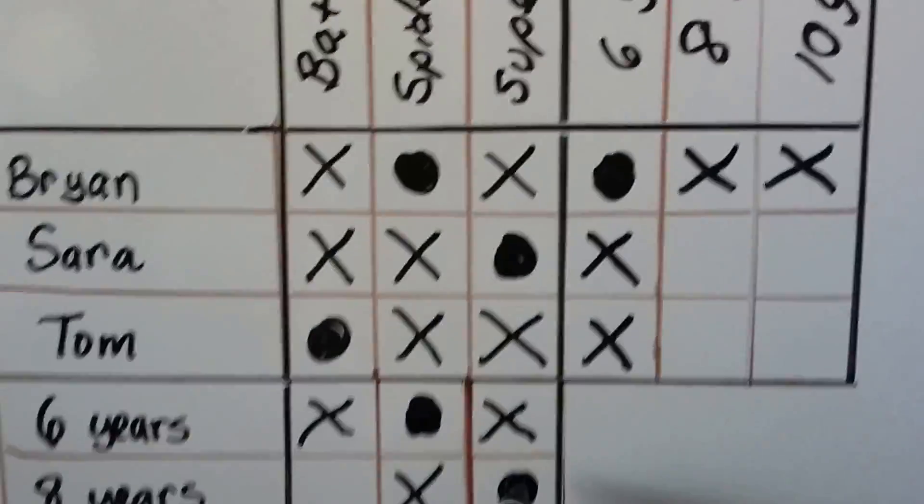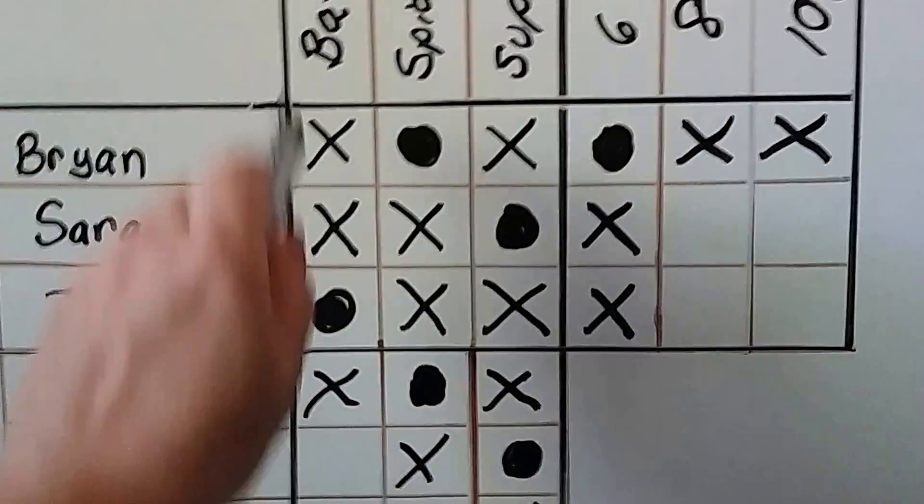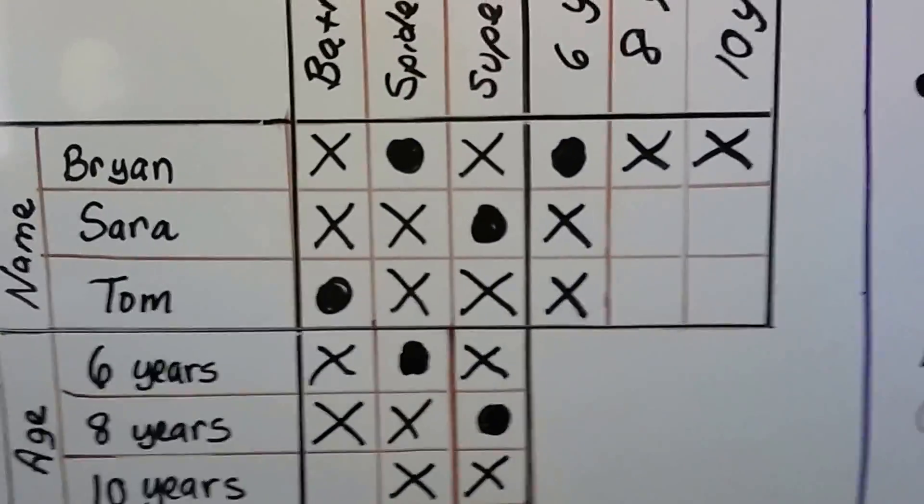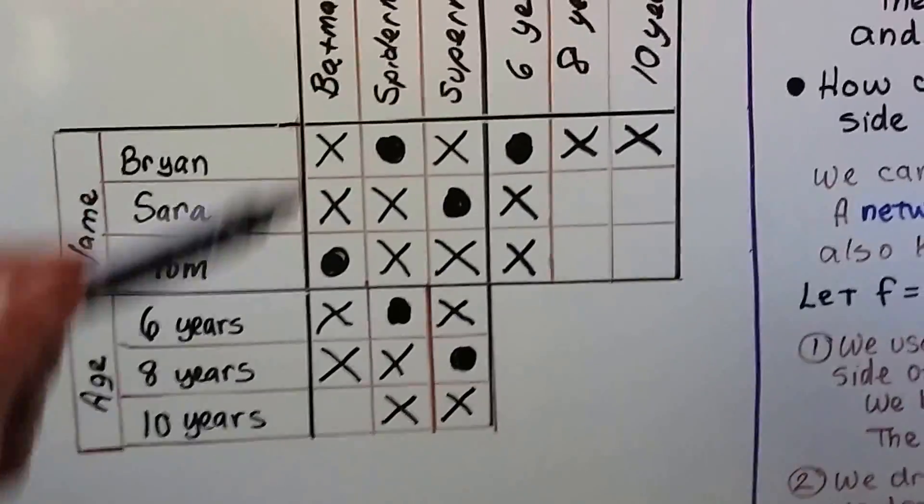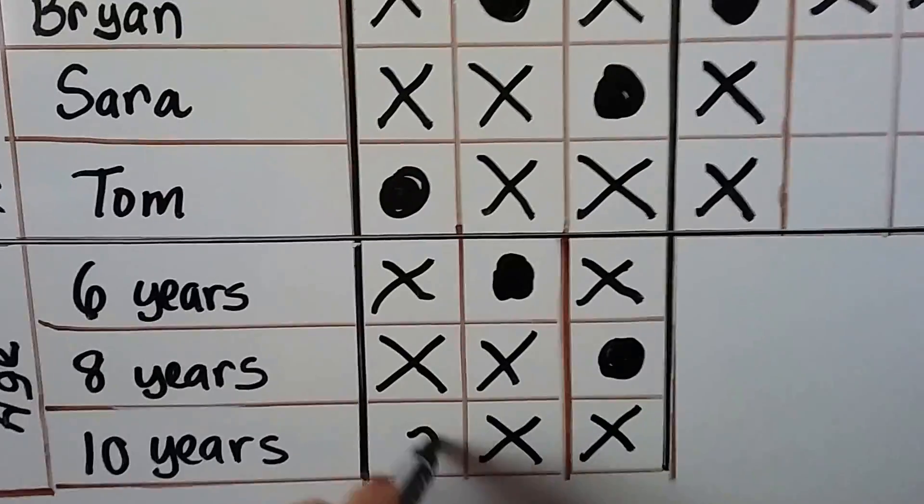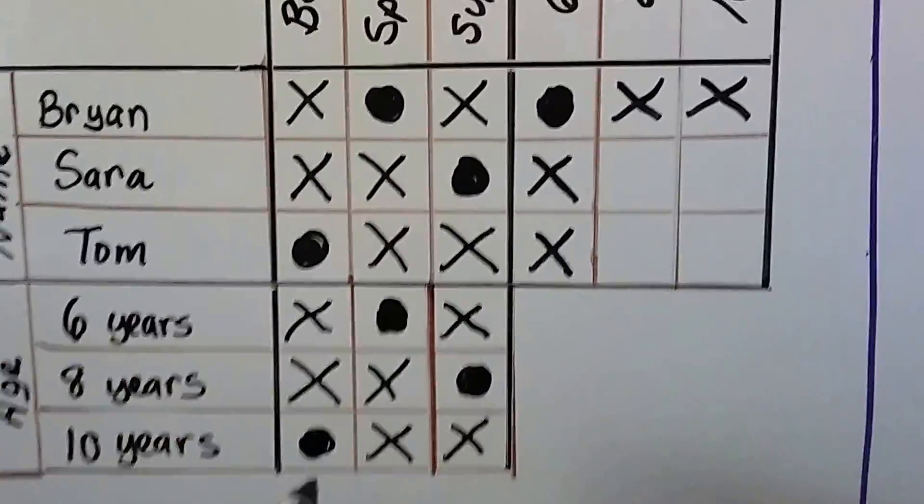And if Superman is the eight-year-old, then it's not Batman, so we can put an X here. That means the only thing left is Batman being the ten-year-old.